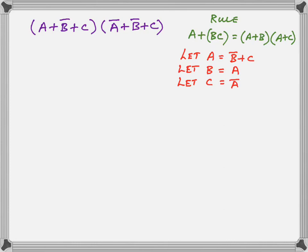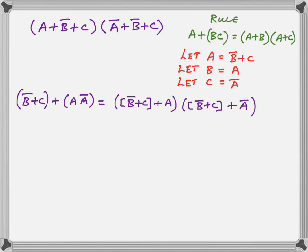So to see how it works, just let A be B̄ C, let B be A, and let C be Ā. And that will relate it to the one in purple on your left. So let A be B̄ C, B̄ C, B is A, C is Ā. And what happens when we plug it into the rule? Well, bingo! Lo and behold, we end up with this expression shown here.